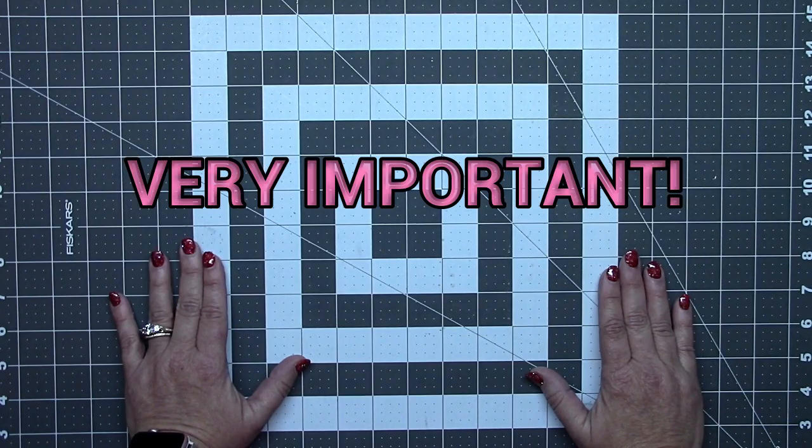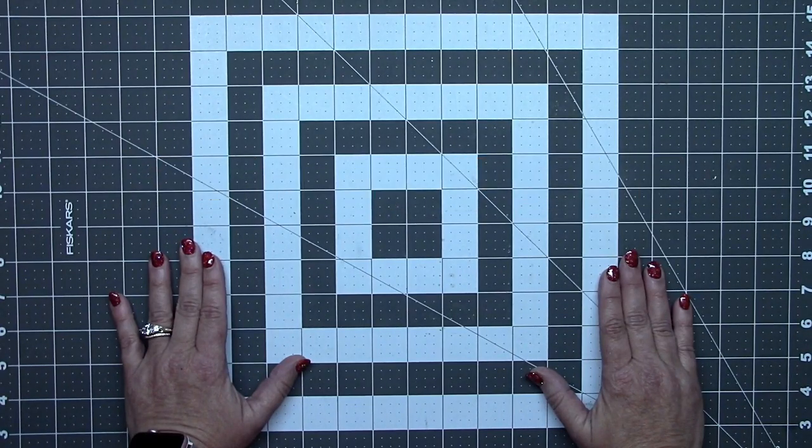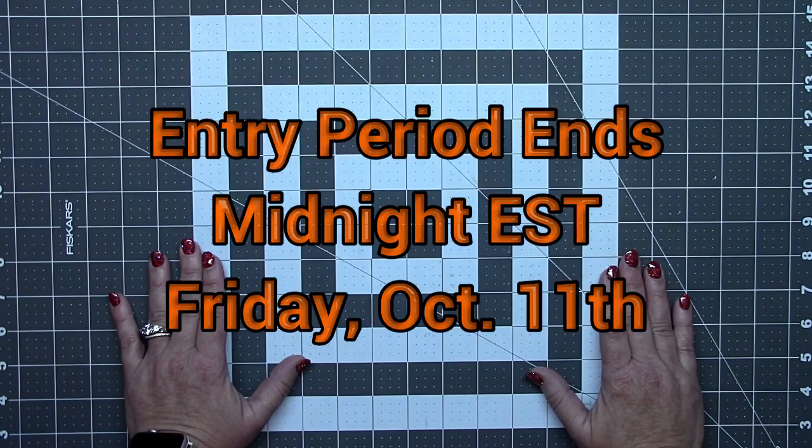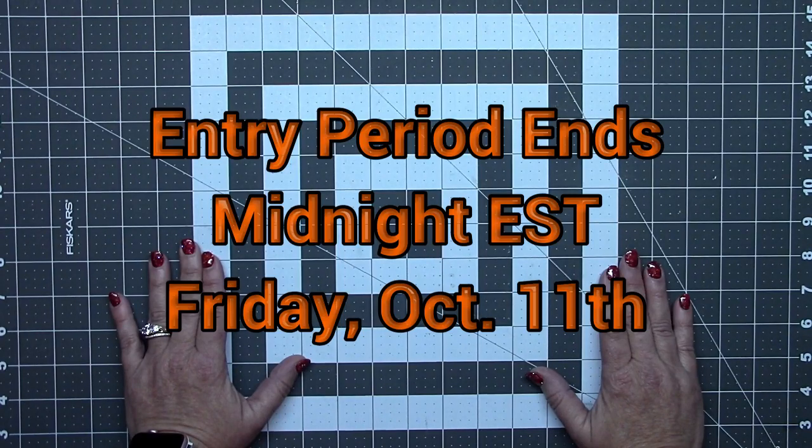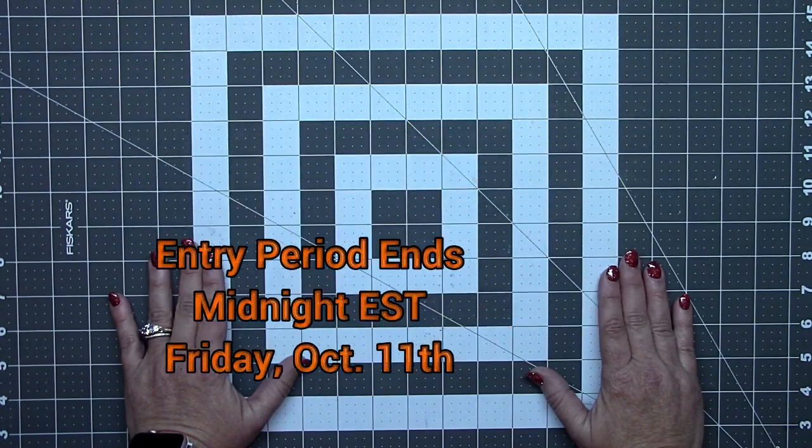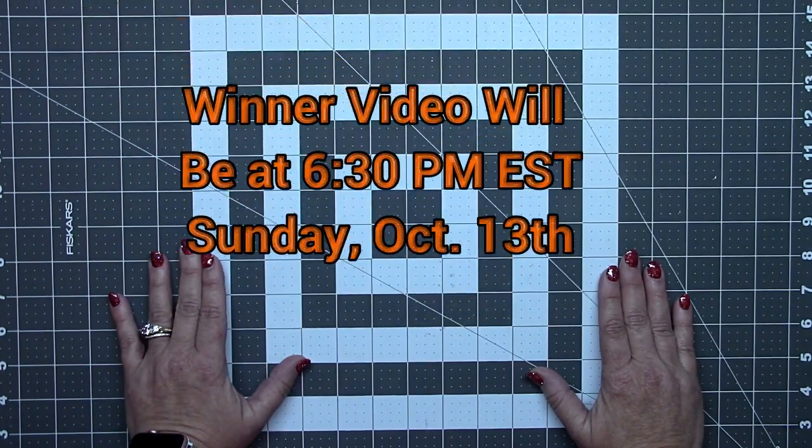Drawing entry is open now and will end at midnight Eastern Standard Time on Friday, October 11th, 2019. The winner will be announced at 6:30 p.m. Eastern Standard Time on Sunday, October 13th, 2019.